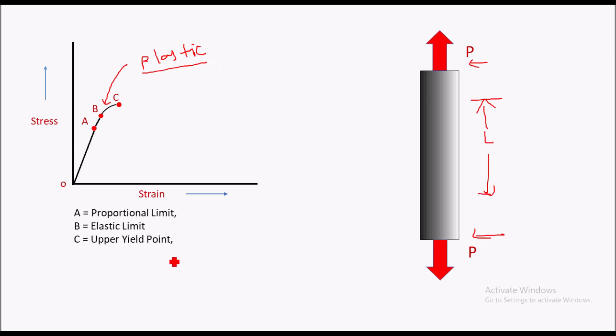So that is called point C, the upper yield point. The stress corresponding to this point is called the yield strength SY—that is the yield strength, the maximum stress before the plastic deformation of material takes place.